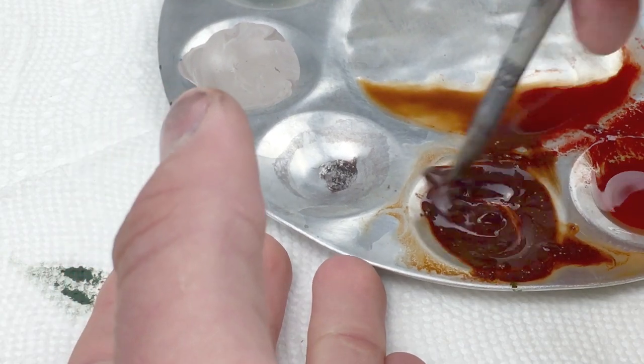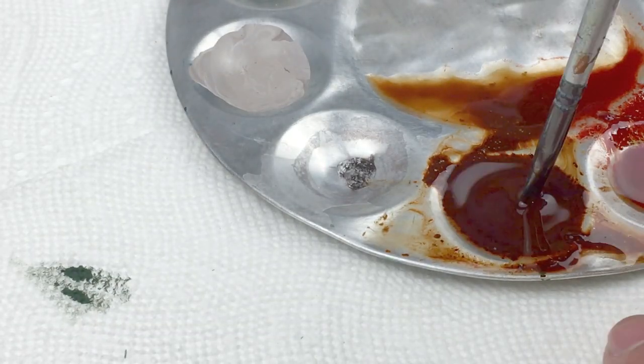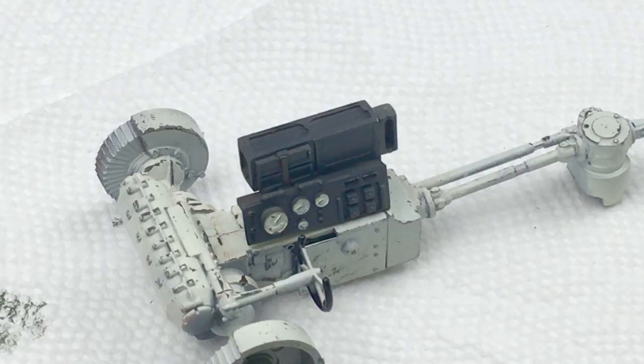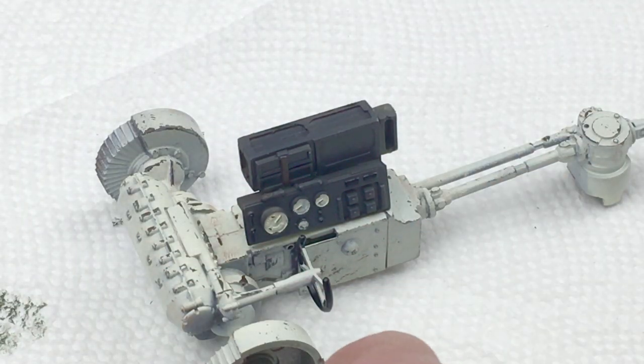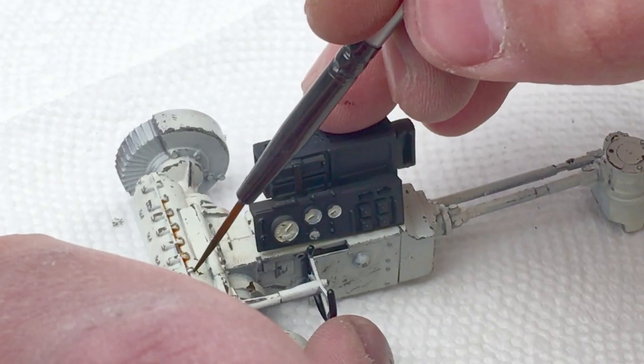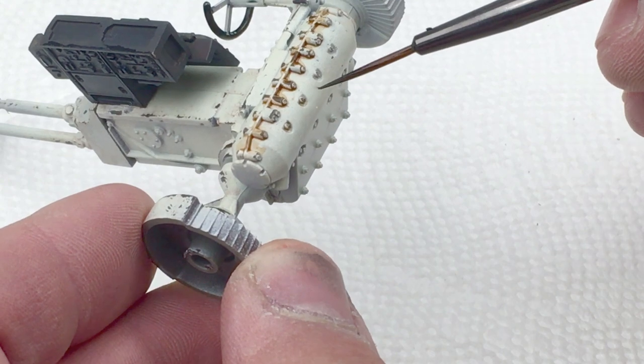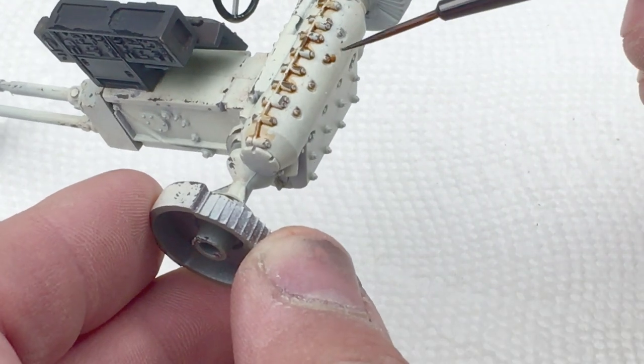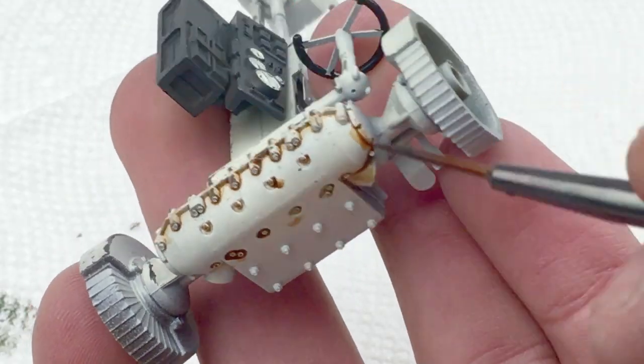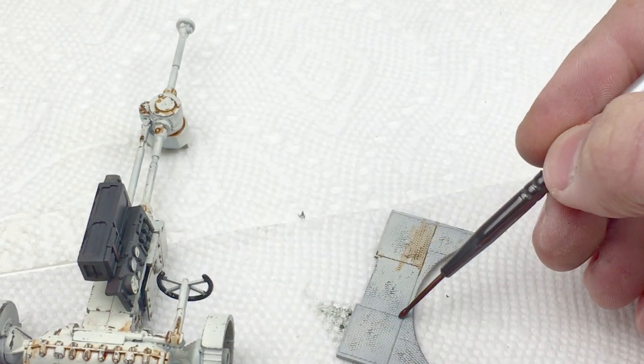We're going to start with a pin wash, thinning some burnt sienna down with lacquer thinner. This allows the paint to flow around details, panel lines and corners, highlighting them, and making the tank look used. You can see the effect on the steering assembly. I'm going to apply the wash around all corners, details, and panel lines.